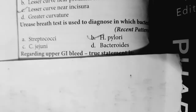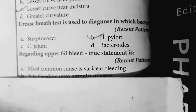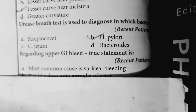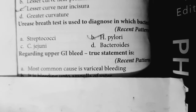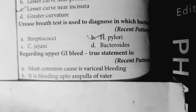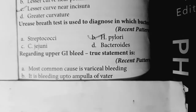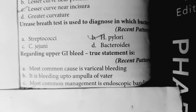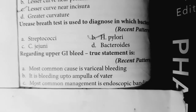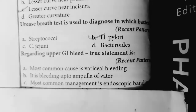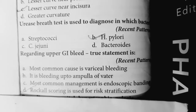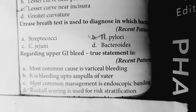Question 4: Regarding upper GI bleeding — true statement is most common cause is variceal bleeding. False. Most common cause of upper GI bleeding is peptic ulcer due to duodenal ulcer bleeding, not variceal bleeding. Upper GI bleeding means bleeding up to the ligament of Treitz, not the ampulla of Vater. Most common management includes IV fluids and resuscitation first, before endoscopic banding. Rockall score and Blatchford score are used for risk stratification — that is true.